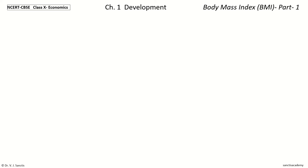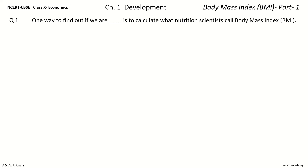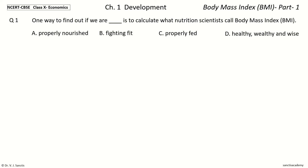Question 1: One way to find out if we are dash is to calculate what nutrition scientists call Body Mass Index BMI. The options are: properly nourished, fighting fit, properly fed, healthy wealthy and wise. And the answer is properly nourished.